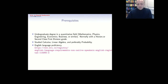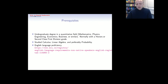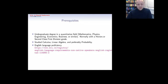The prerequisites are typically an undergraduate degree in a quantitative field such as mathematics, physics, engineering, economics, business, or similar. We generally ask for honors or second class first division, but since these concepts vary by country, we look at content on a case-by-case basis. To successfully complete the program, students should know calculus, linear algebra, and preferably probability. English language proficiency standards for postgraduate programs can be found on the DCU website.